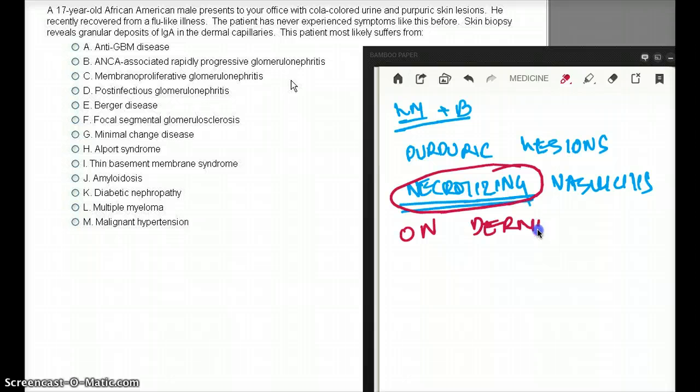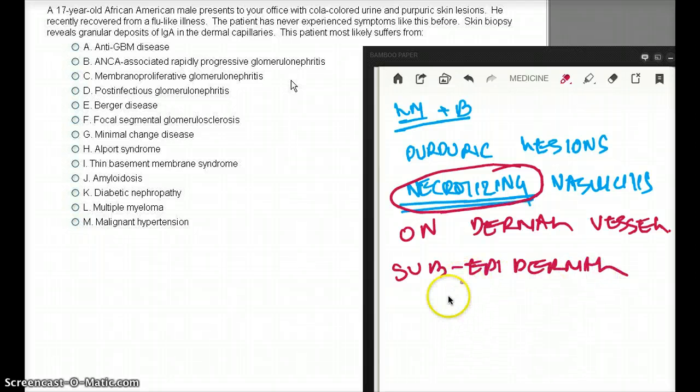If you see necrotizing vasculitis on dermal vessels, that is the answer right there. That's a giveaway. That's a question that they're begging you to pick the mark. And also, you're going to see this kind of vasculitis in sub-epidermal area. You're also going to see sub-epidermal hemorrhage. Sub-epidermal hemorrhage is also going to be seen. This is what you're going to see in light microscopy.